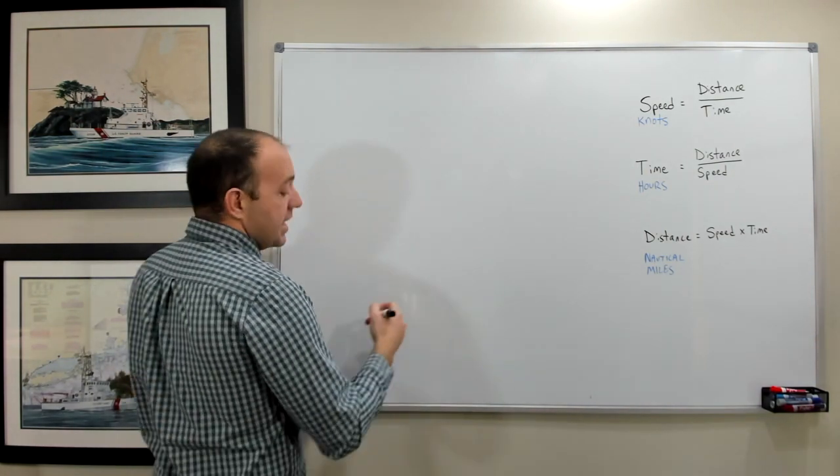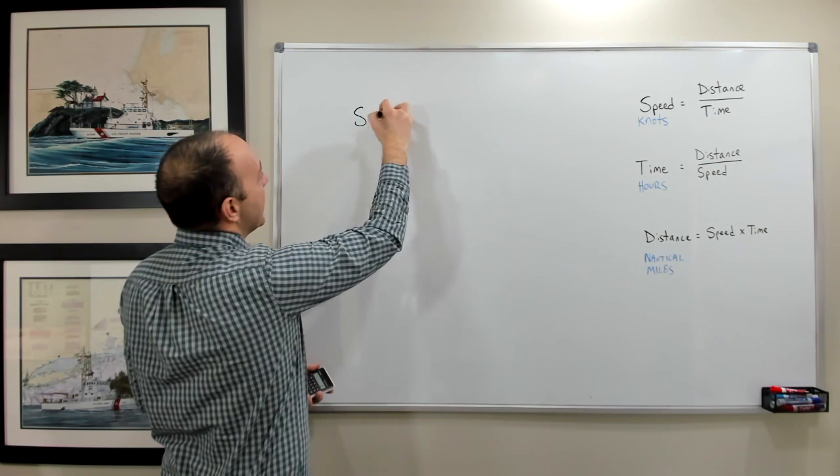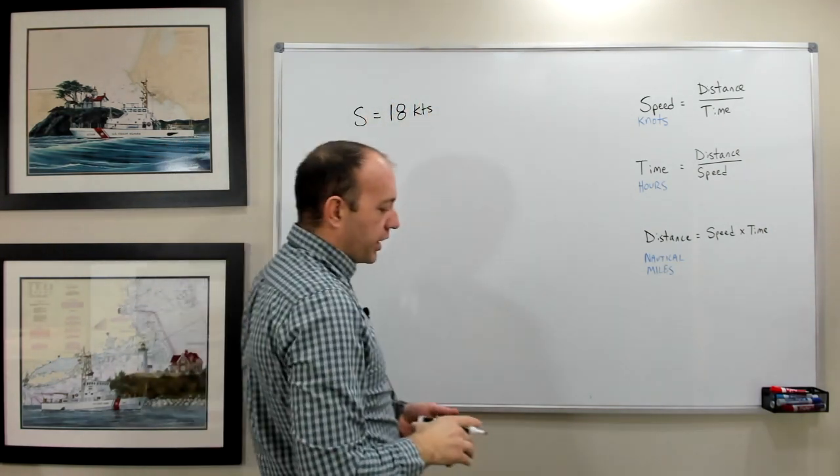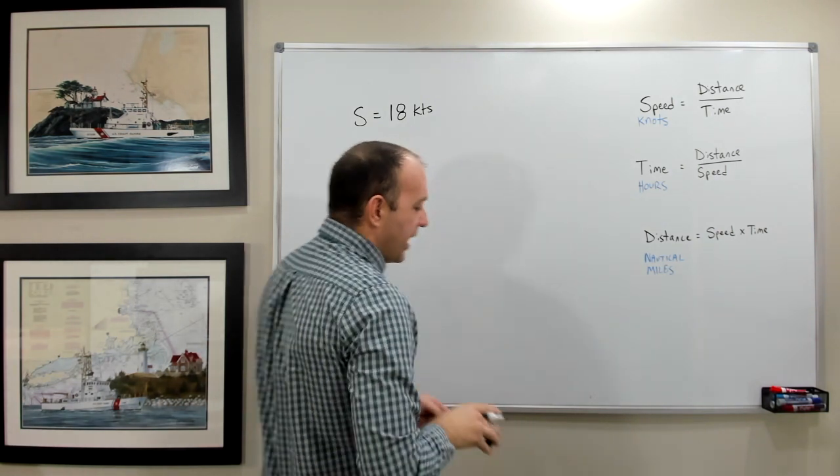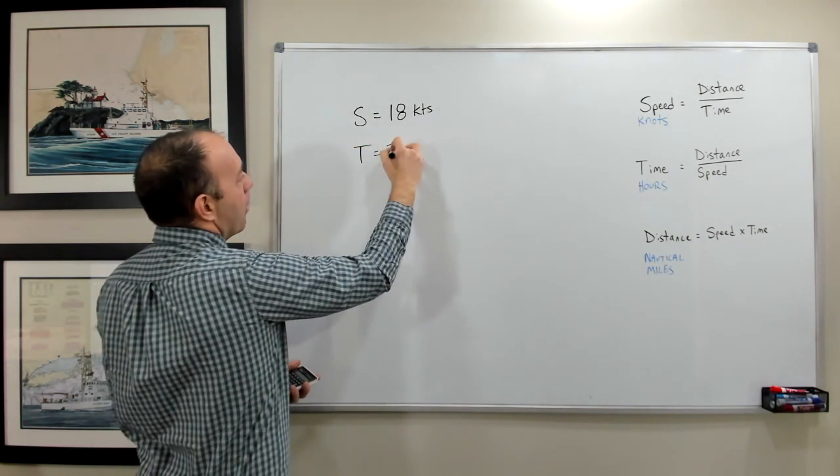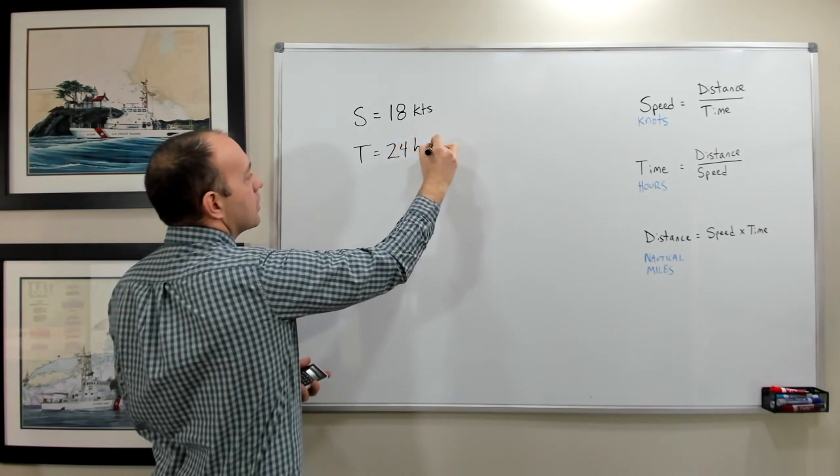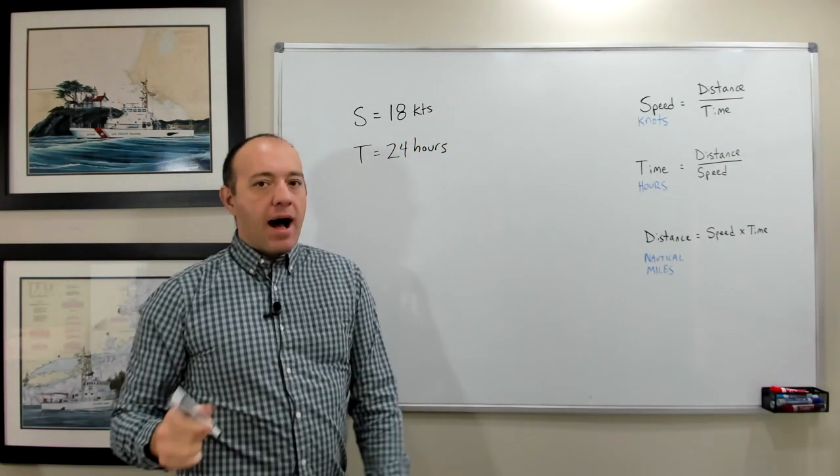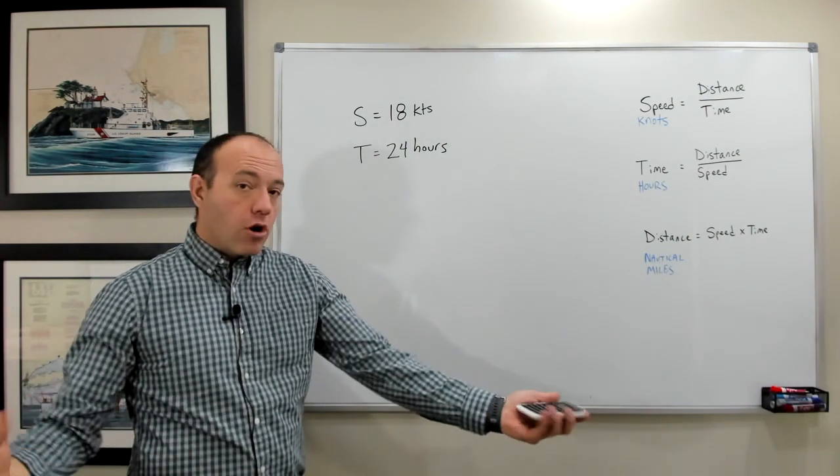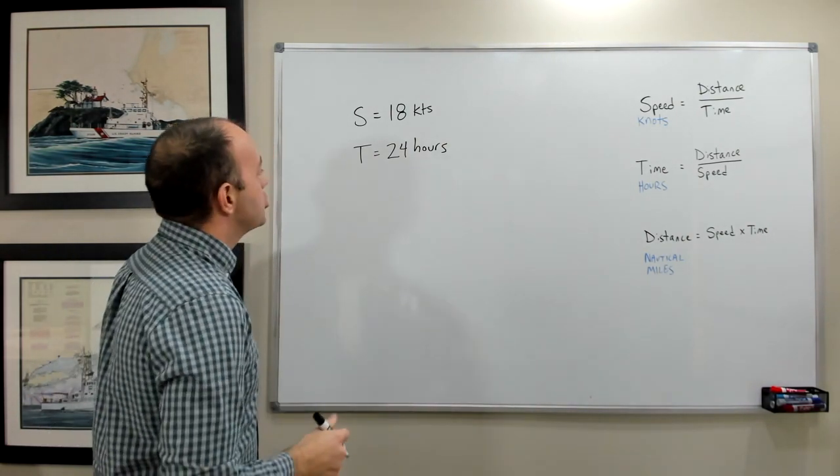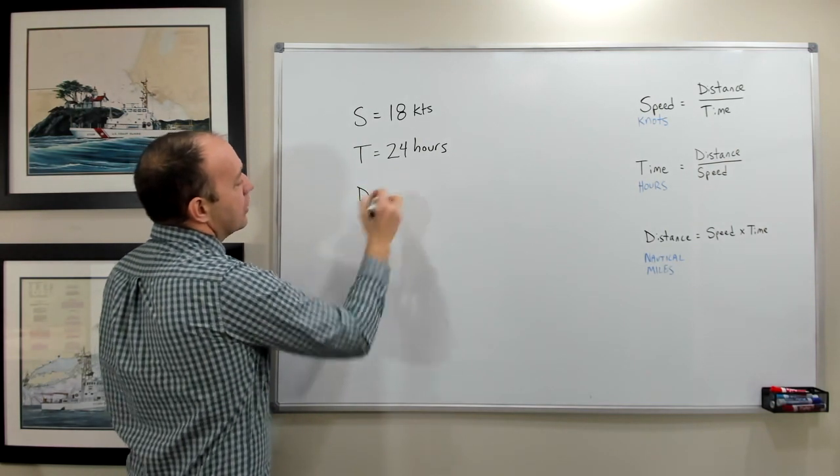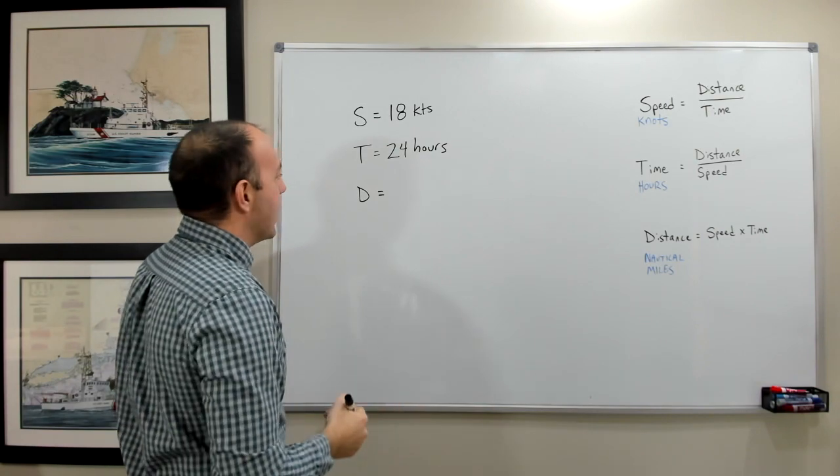Here's another example. Let's say that our speed is 18 knots. We're on a pretty quick moving ship and I want to know how far will I go in 24 hours? In other words, how many miles per day will I cover if I go 18 knots? Maybe I'm crossing an ocean or taking a large journey.